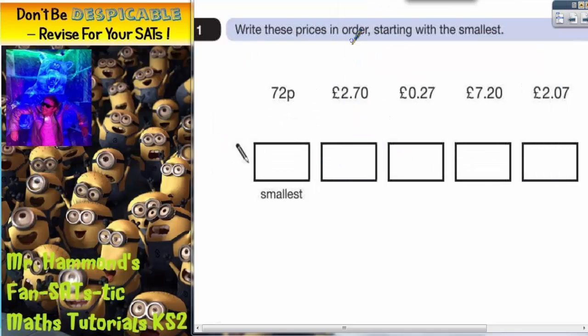Okay, so write these prices in order starting with the smallest. Should be a nice easy one to start us off because this is only question one. We've got 72 pence, £2.70, 27 pence, £7.20, and 2 pounds and 7 pence.